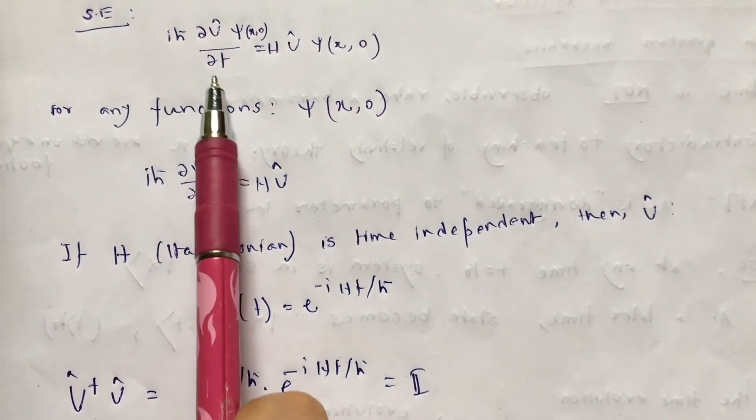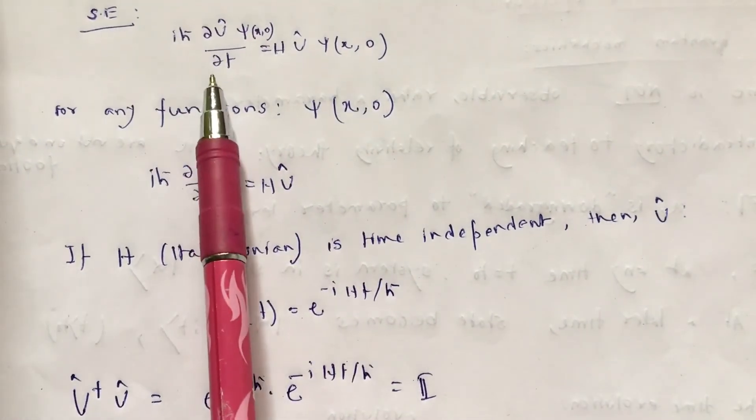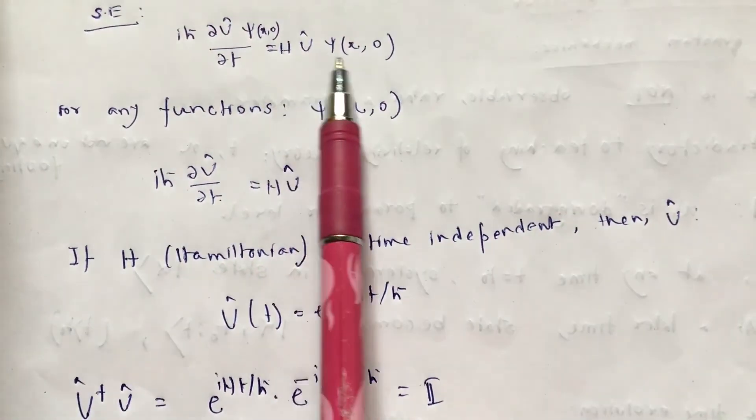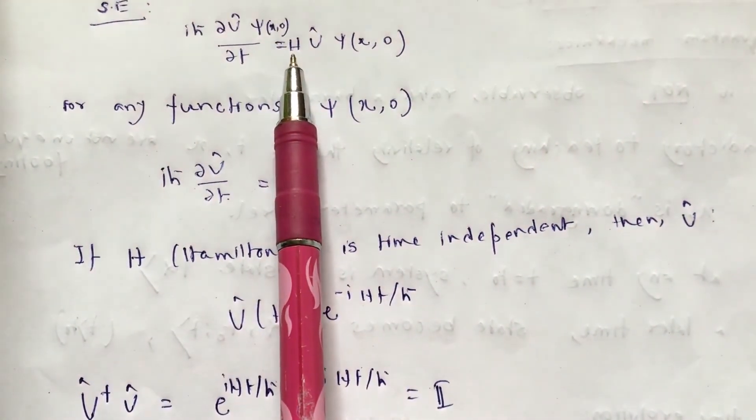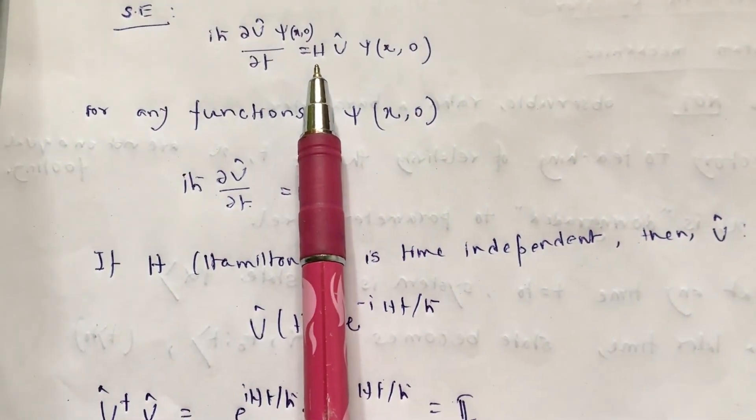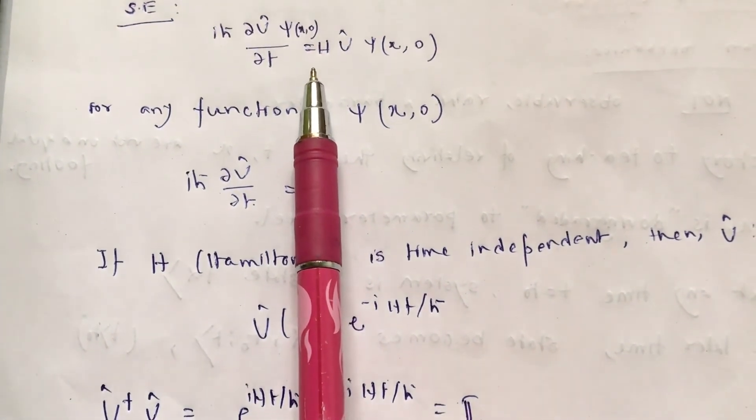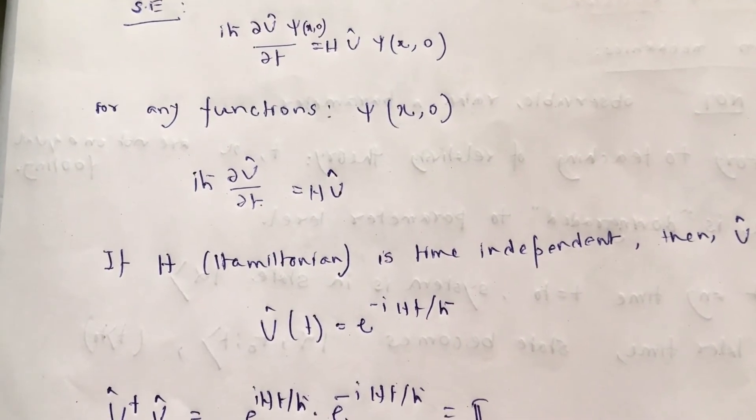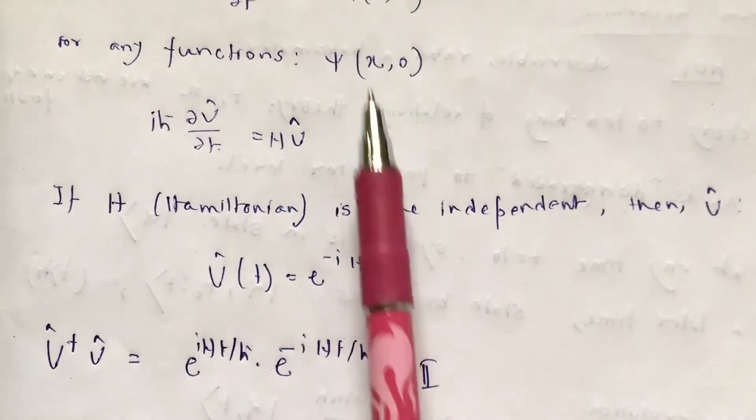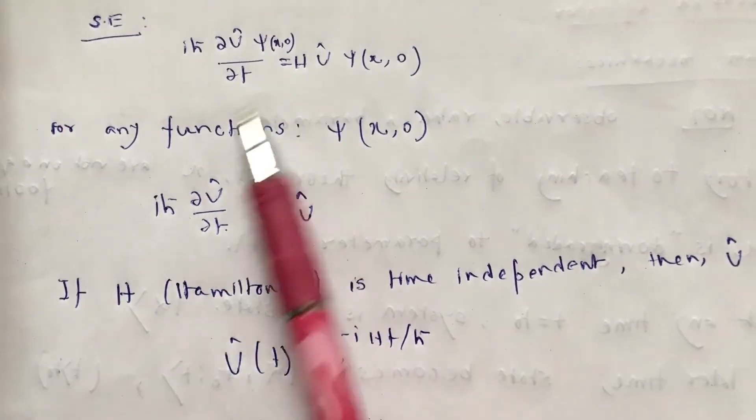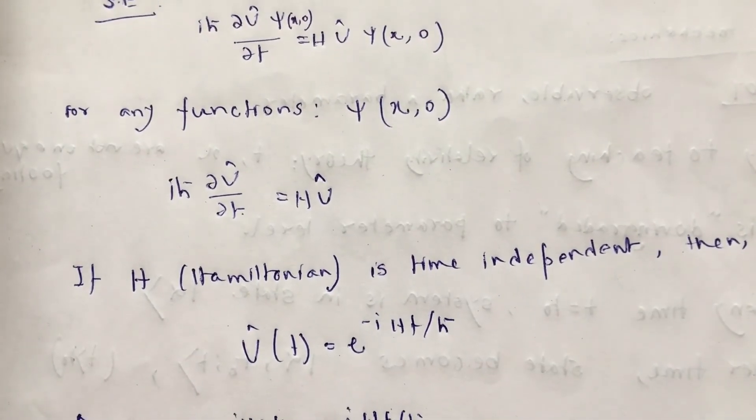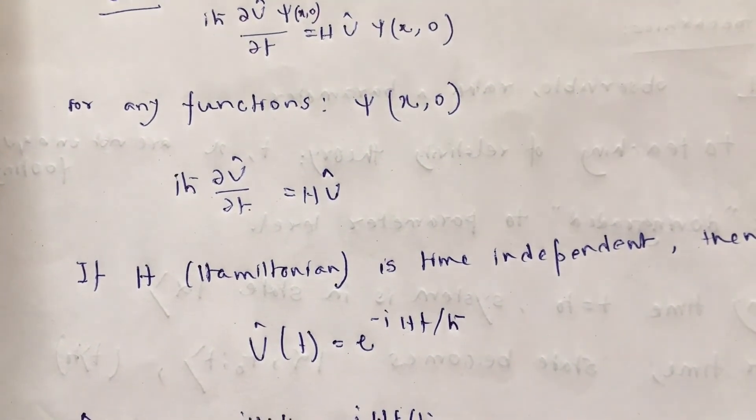And this is what we call the linearity of this propagator. So for the propagator, our Schrodinger equation looks like this. It is ih cross del del t of u hat chi x0 equal to Hamiltonian h u chi x0 and as we know Hamiltonian does not contain here any explicit time dependence. For example, h is summation of kinetic energy p square by twice m plus some potential energy and potential is a function of x. For example, if we think about harmonic oscillator that the potential energy term will be half m omega square x square, which means this Hamiltonian contains no explicit time dependence.